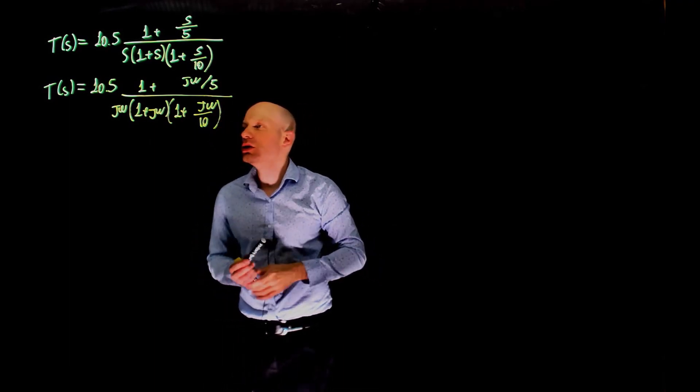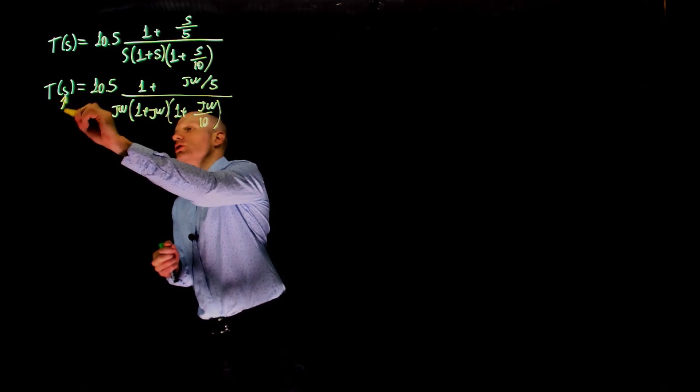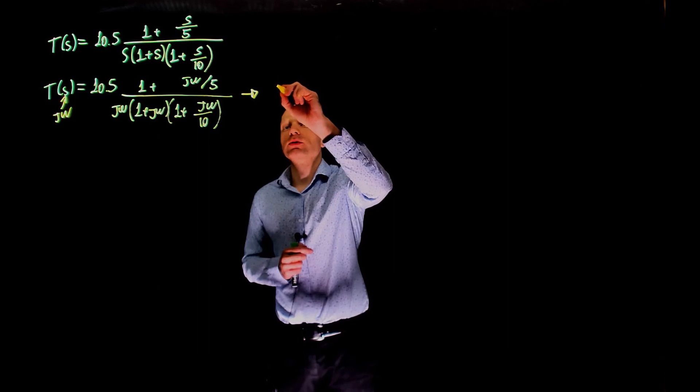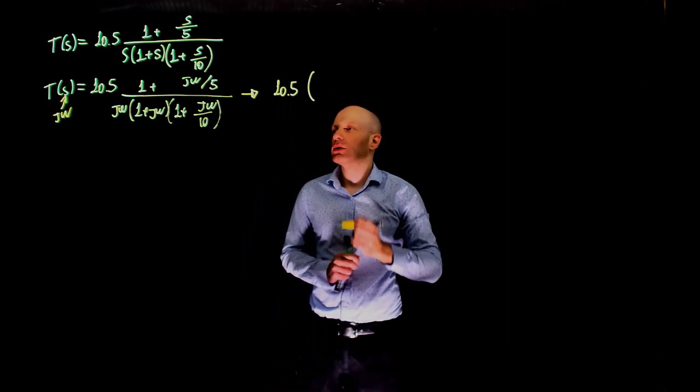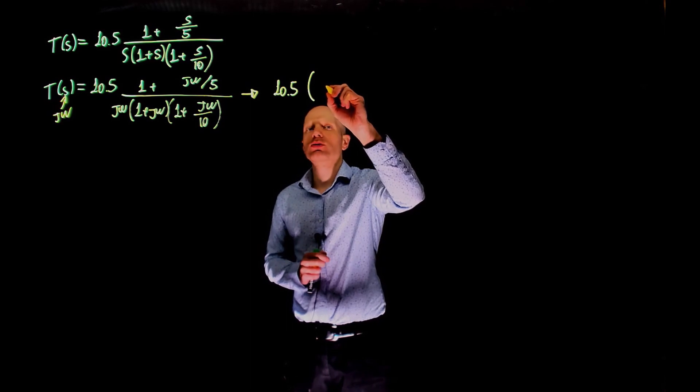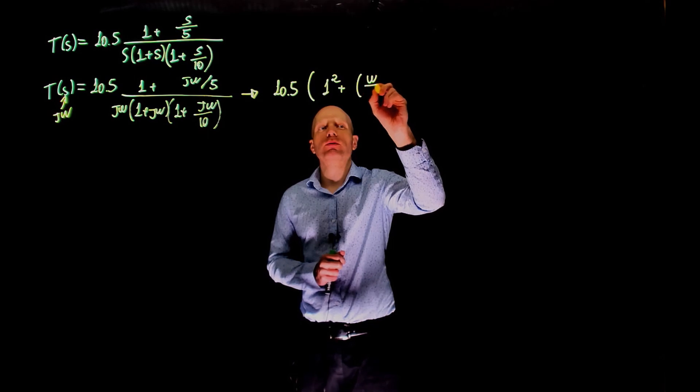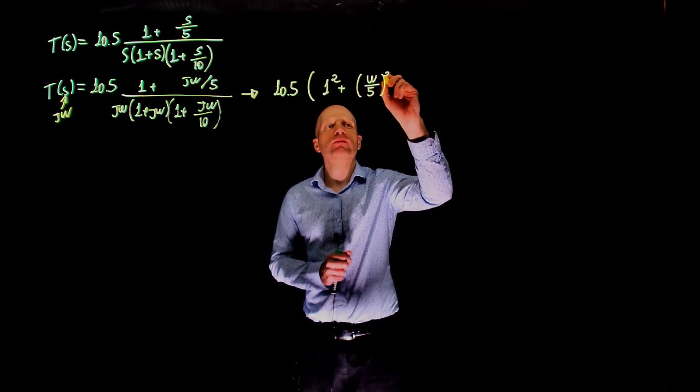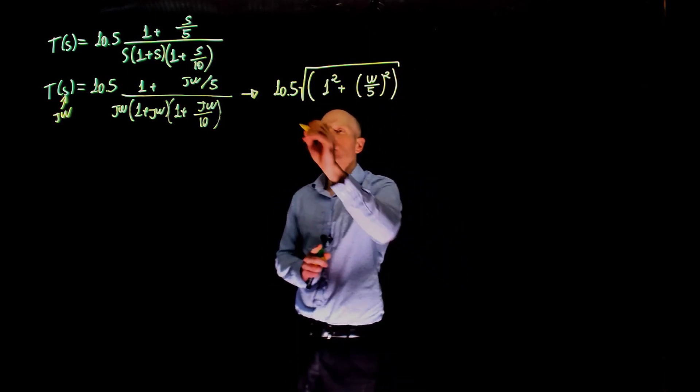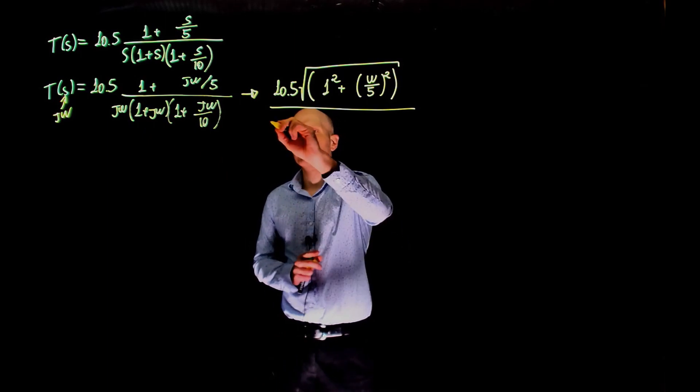Now it becomes easy to find the magnitude of T. This magnitude is the magnitude of 10.5, that is 10.5, times the magnitude of this zero. The magnitude is the real part squared plus the imaginary part squared, which is omega over 5 square root of that, divided by the magnitude of j omega, which is simply omega.